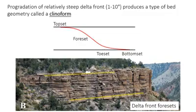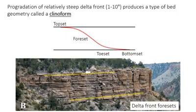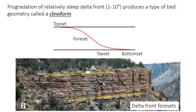The delta front and to some extent the prodelta are both characterized by fairly steep gradients. This is especially true in deltas dominated by fluvial processes. As a result, deltas have this large-scale bed geometry called a clinoform, which is a sigmoidal or kind of S-shaped bed.